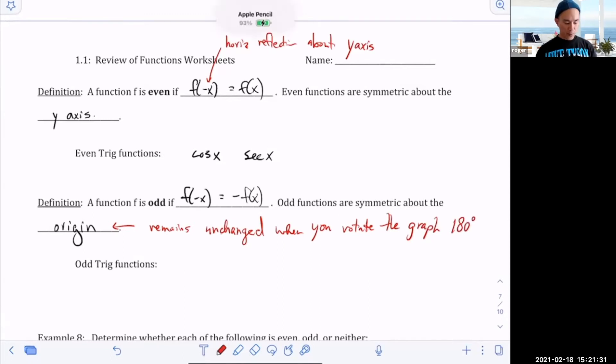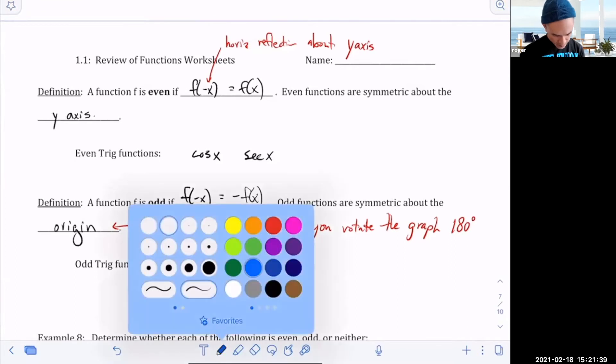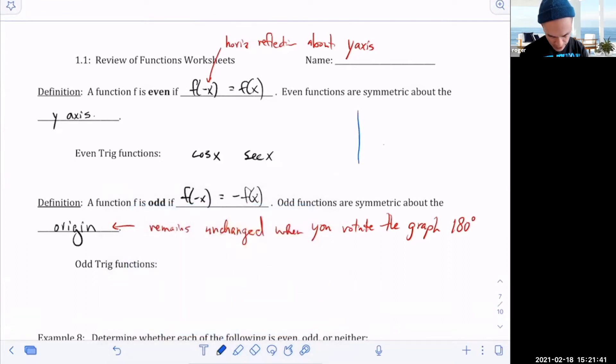So the most famous odd function is x cubed. So I'm going to draw a couple pictures here. For the even one, I was trying to show you if you have something like x squared, when you flip it across it remains unchanged. The most famous odd function is x cubed, so that looks something like this.